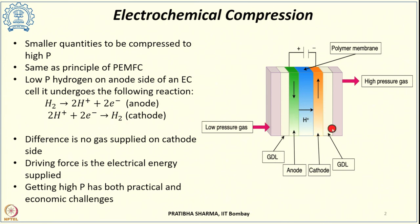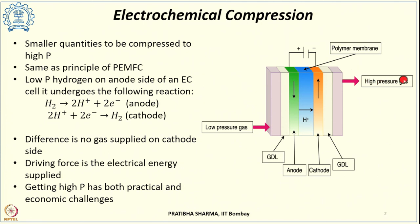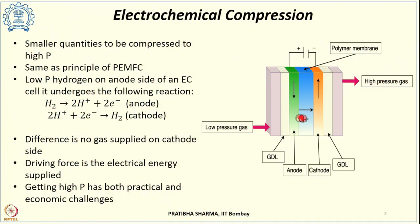Continuous pumping of low pressure gas in a closed system will increase the pressure on the cathode side. When the delivery pressure is attained, we can get high pressure hydrogen out of the compressor. This process continues as long as the driving force — electrical energy or current — is being fed into the system. More current supplied means a higher rate of proton transfer from the anode side to the cathode side.